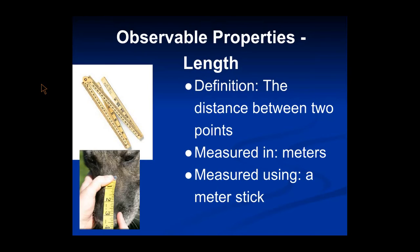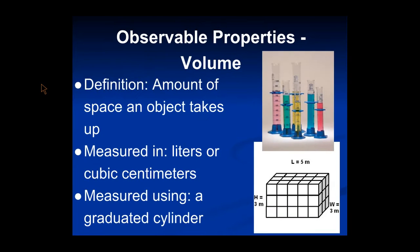The next property is kind of tricky. It is the volume. Volume is the amount of space an object takes up. We use liters or cubic centimeters as our units for measuring volume. That's why it's tricky - there are two units.